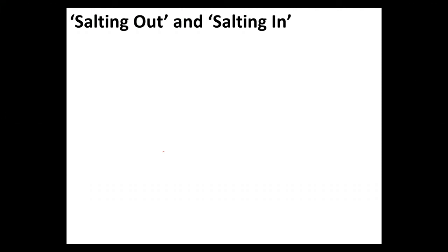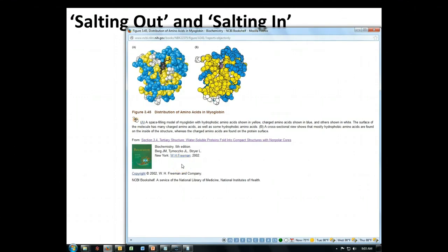A lot of you have probably taken a decent number of biology courses and are aware of the idea of salting in and salting out. So let's talk about exactly what's going on in that process. In the last video where we talked about the activity coefficients, you saw that by putting some salt in, we were able to start getting salts to dissolve even better — which was a little counterintuitive, that we can start putting sodium chloride in and get potassium permanganate to dissolve better.